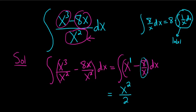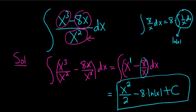So this is going to be minus 8 times natural log absolute value of x. And then we're just missing the plus c. And that's the final answer. I hope that made sense.